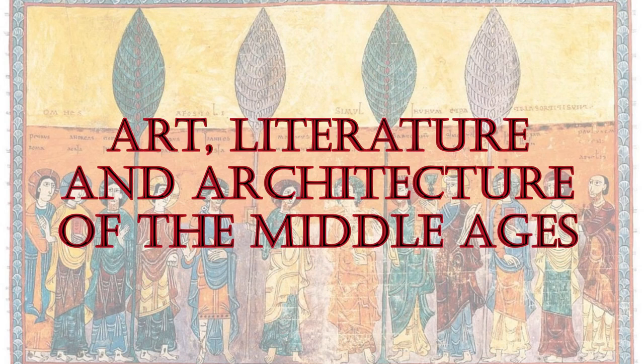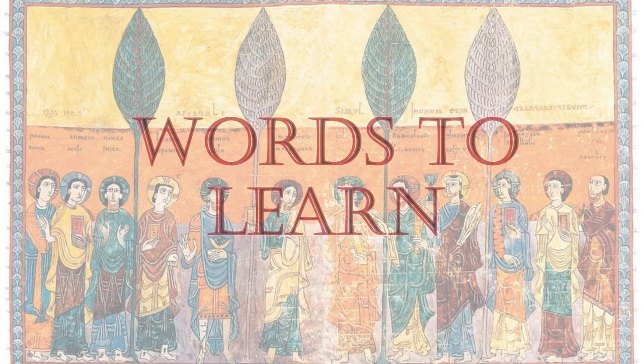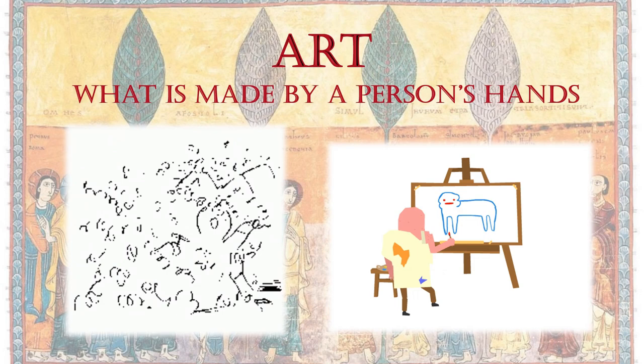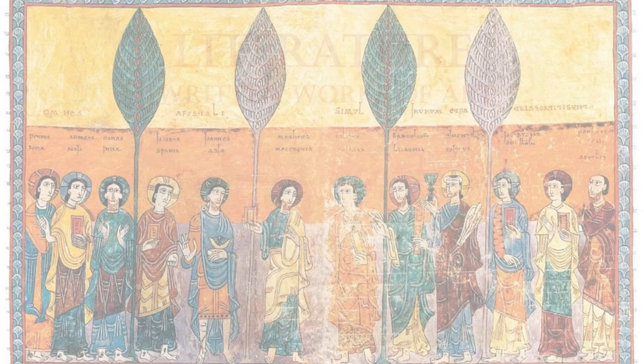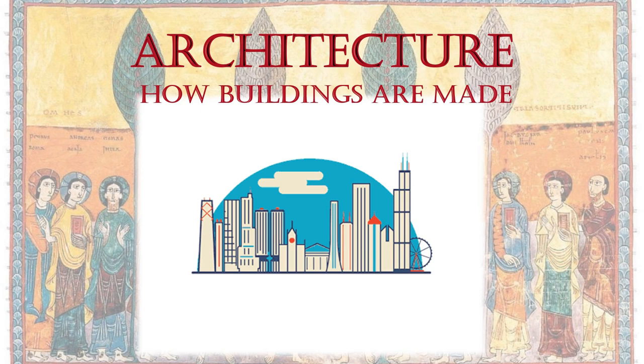Art, literature, and architecture of the Middle Ages. Words to learn: Art is what is made by a person's hands. Literature is written works of art. Architecture is how buildings are made.